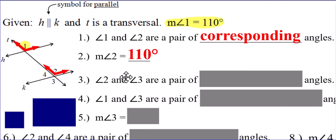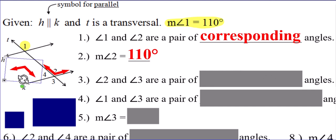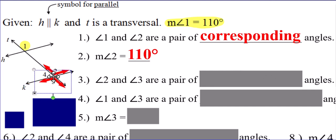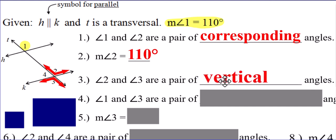What about angles two and three? They are a pair of what? It just so happens that angles two and three are opposite angles formed by two intersecting lines down here. What do we call angles that are opposite angles of each other? We call them vertical angles. By the way, vertical angles are congruent.